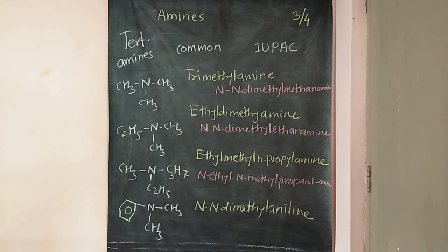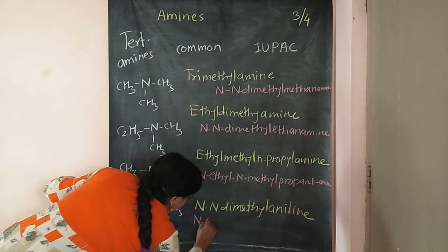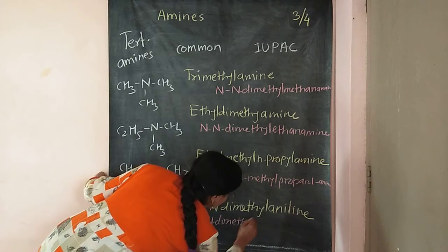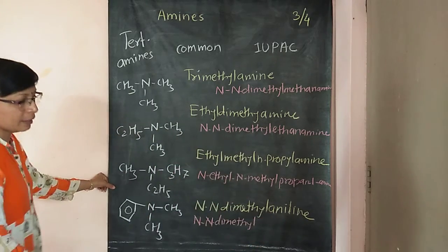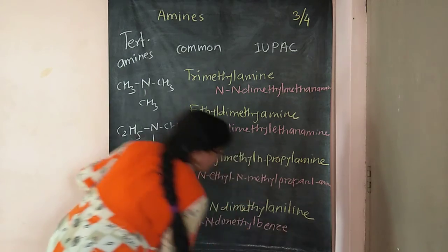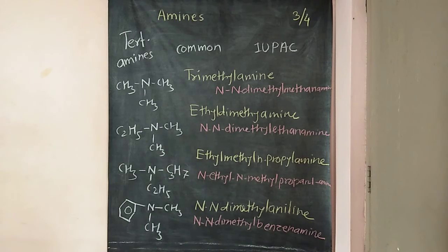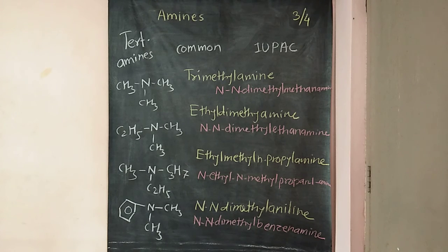For the last member, the benzene ring is the parent. In IUPAC nomenclature, instead of aniline, we use benzene. The ending 'e' is replaced by 'amine', giving benzenamine. The two methyl groups on the nitrogen give the prefix N,N-dimethyl. So the IUPAC name is N,N-dimethylbenzenamine. This was the nomenclature of tertiary amines. Next, we will look at preparation methods.